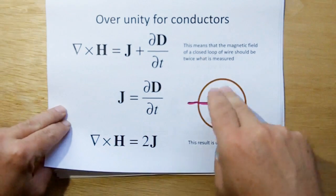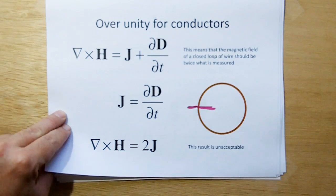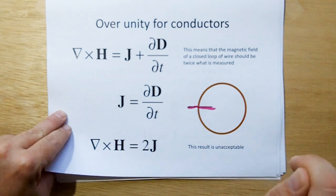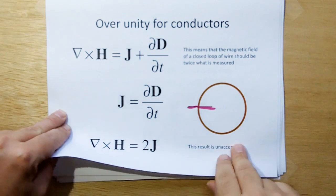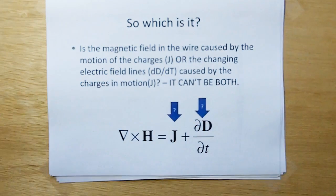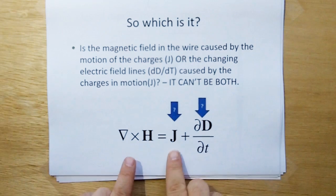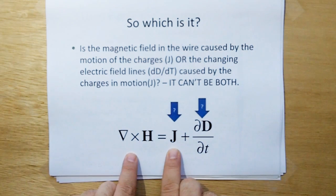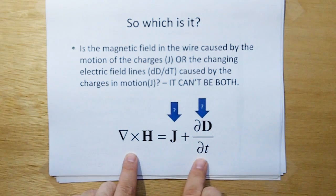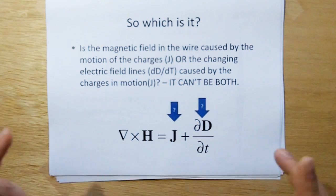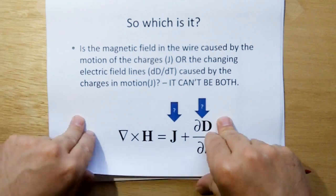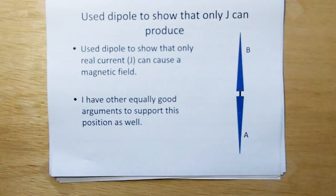If we put current in a wire and we measure the magnetic field, it's going to be not twice the current, the effect of the current, but once the effect of the current. So then the question becomes, well which is it? Is the magnetic field contributed by J, the actual real current, or by the electric flux caused by the current in motion? It can't be both, because then we get over unity.